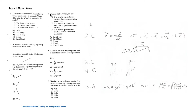Question 3: which of the following are true? One: if an object's acceleration is constant, then it must move in a straight line. Two: if an object's acceleration is 0, then its speed must remain constant. Three: if an object's speed remains constant, then its acceleration must be 0.